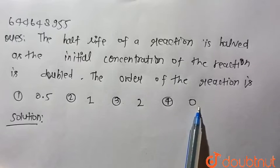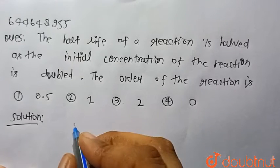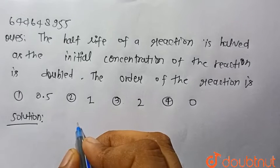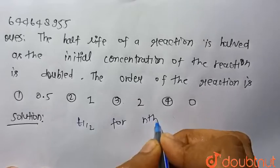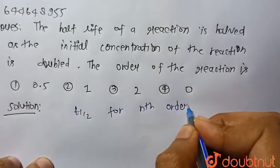So we know that for nth order reaction, t_half for nth order reaction is given by...